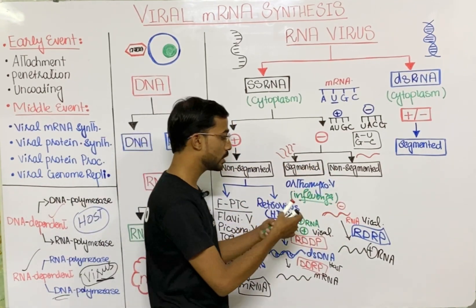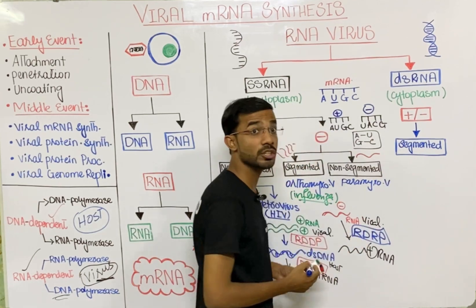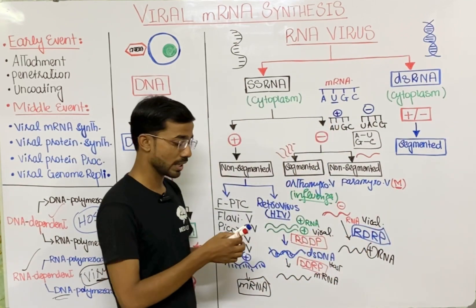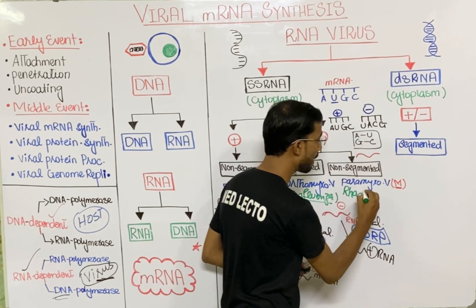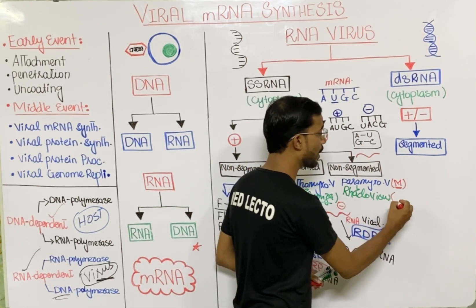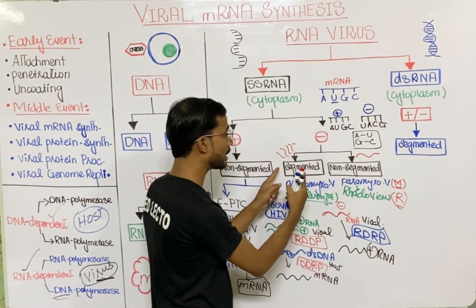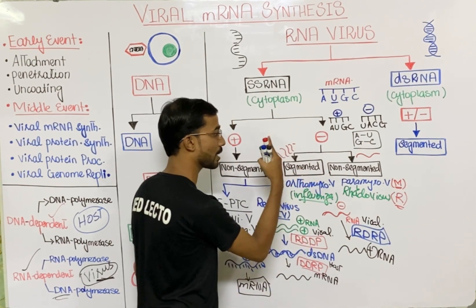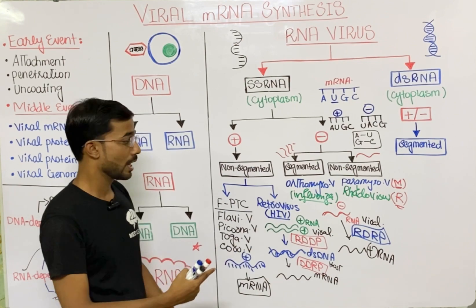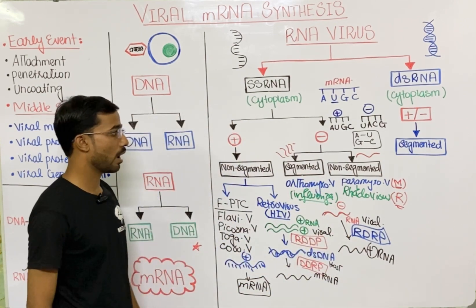In the non-segmented negative polarity category, you see Paramyxovirus — which includes the measles virus — and Rhabdovirus, the most important virus of which is the rabies virus that causes rabies. The difference is that influenza virus has segmented RNA, but in Rhabdovirus and Paramyxovirus you see unsegmented RNA. However, the process is the same: negative polarity converts into positive with the help of RNA dependent RNA polymerase.